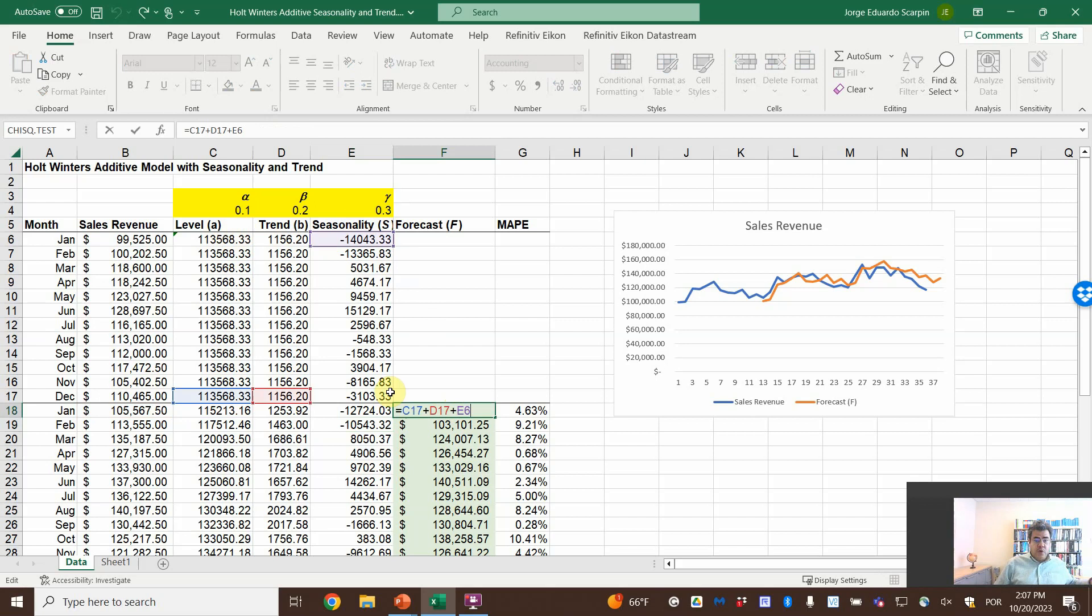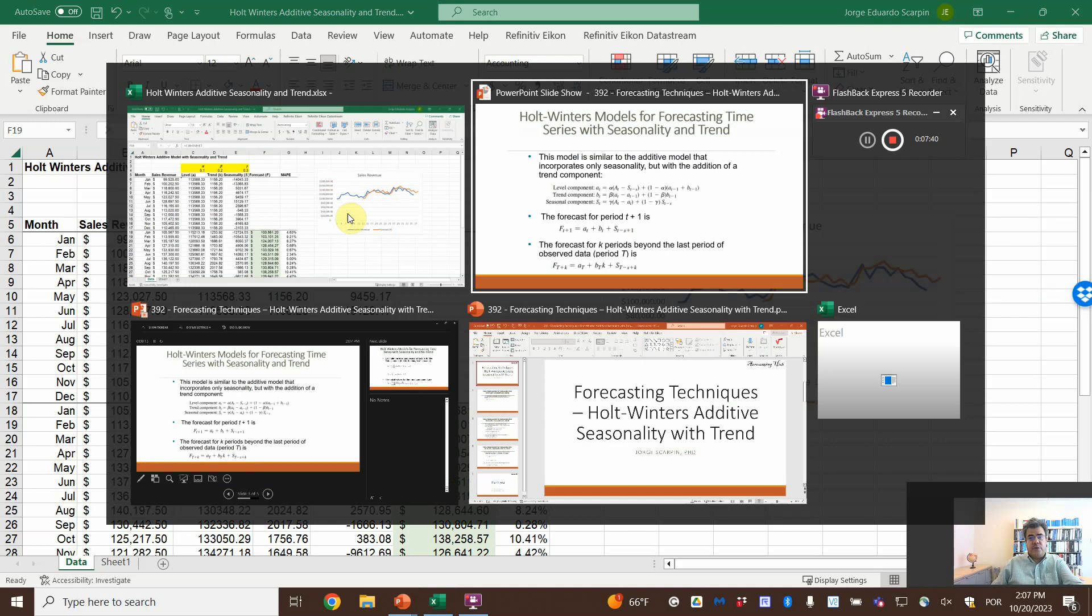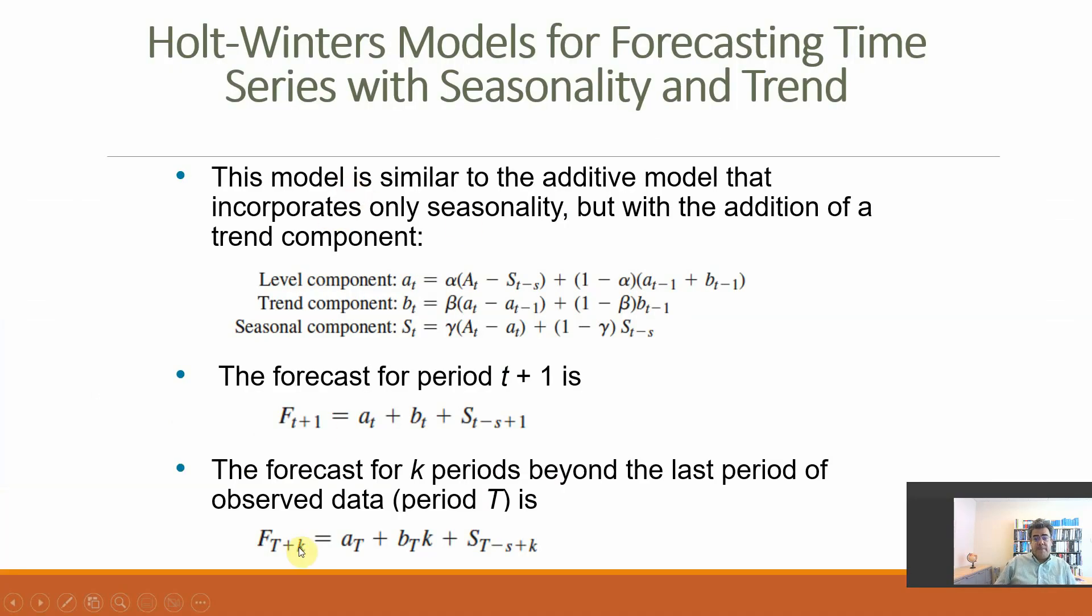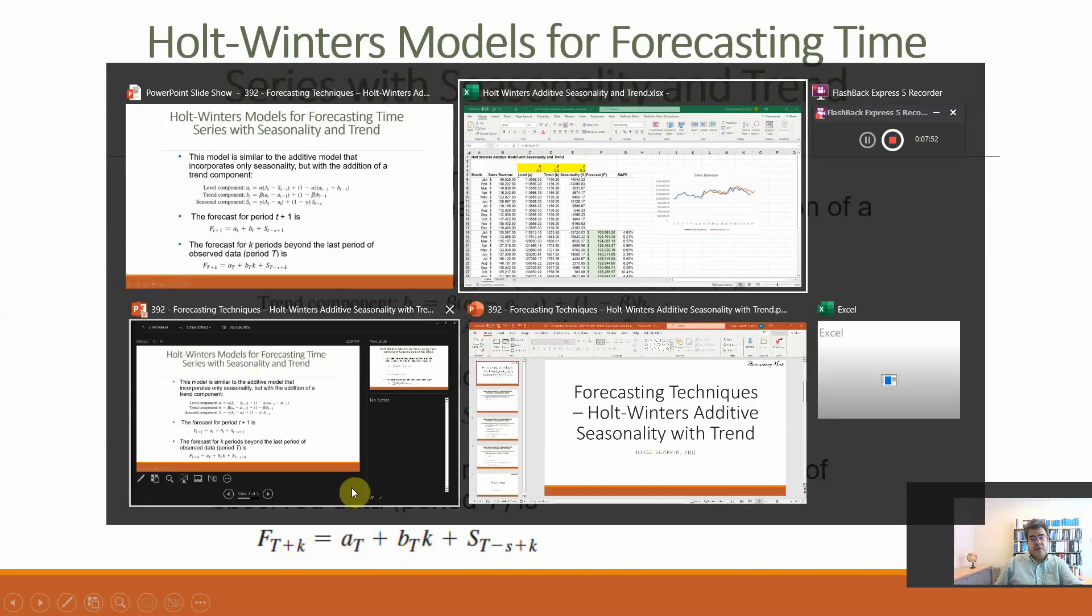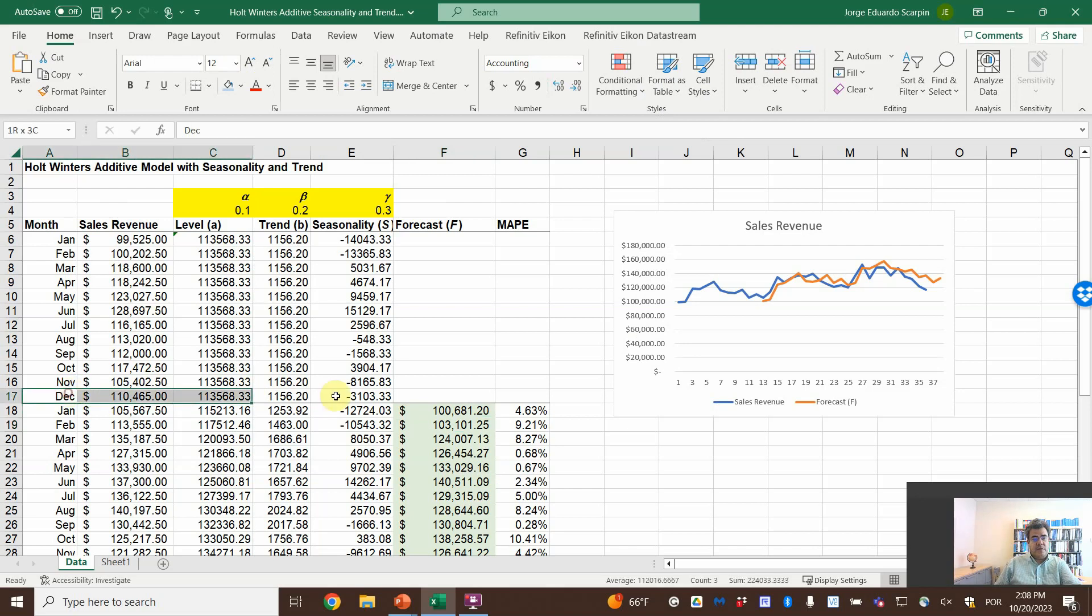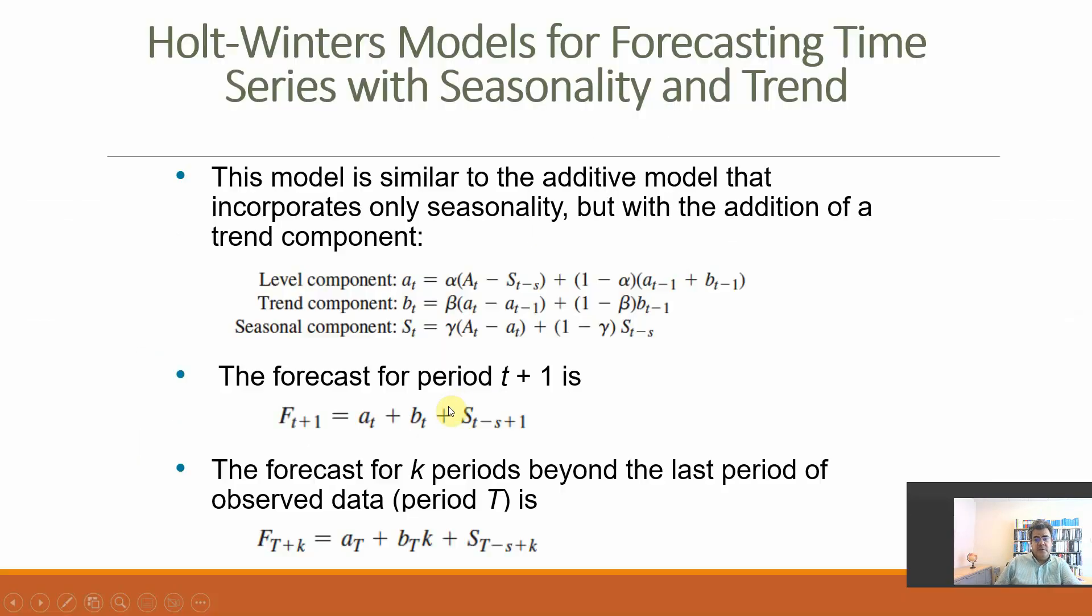We combine previous level, plus previous trend, plus the first seasonality. Okay, so that is, if we go here, FT plus K is AT plus BT times 1. So T here would be December, T plus K, that is January. So we are assuming that we don't know the January numbers. And then, plus the seasonality of the last year.